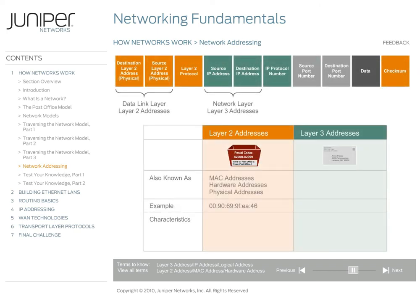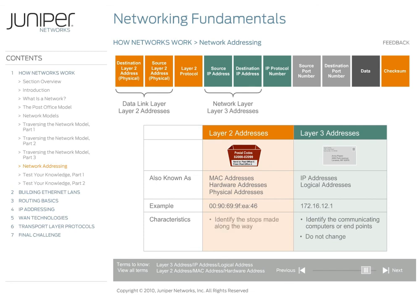By the way, layer 2 addresses are sometimes referred to as MAC addresses, hardware addresses, or physical addresses. Layer 3 addresses are also known as IP addresses or logical addresses. Later in this course, we'll take a look at the meaning behind the digits in MAC addresses and IP addresses. Like a mailing address for a letter, a layer 3 address identifies a unique destination. Just as there's only one mailing address at your house, on a network a network administrator assigns each computer a unique layer 3 address. The destination and source layer 3 addresses identify the communicating computers or endpoints, just like an envelope has a destination address and a return address. Because the data source and ultimate destination always remain the same, layer 3 addresses never change. Conversely, the destination and source layer 2 addresses identify the stops made along the way and not the communicating computers or endpoints. Layer 2 addresses change with each stop along the route to the final destination.